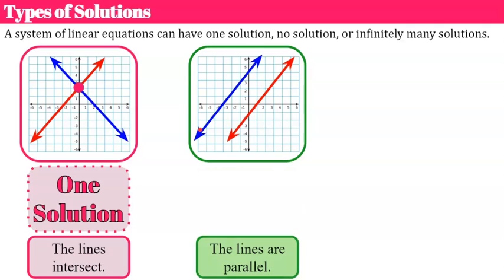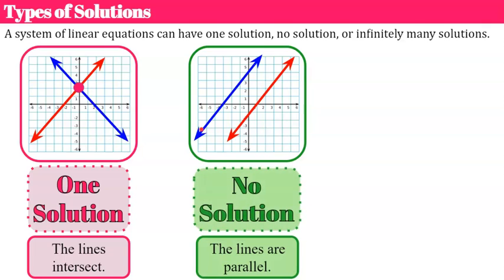The second type of solution is no solution. You could have a system of linear equations that when you graph it, the lines are parallel, meaning all points are equidistant from each other and they will never intersect, making no solution your type of solution.